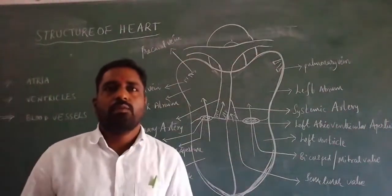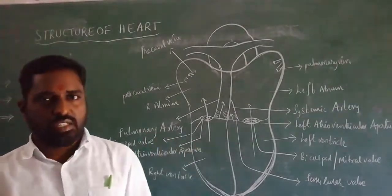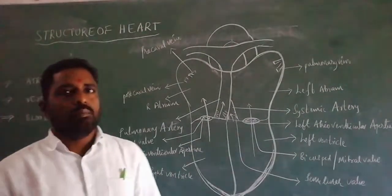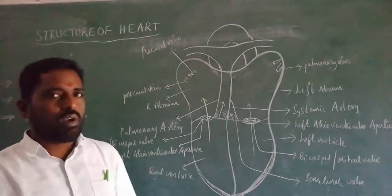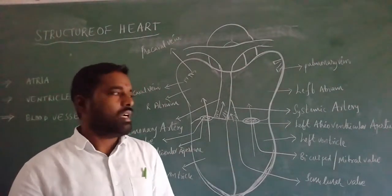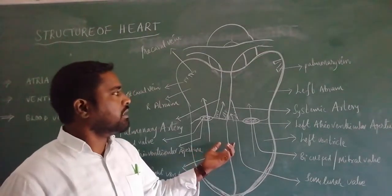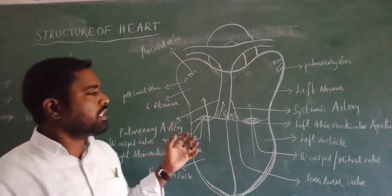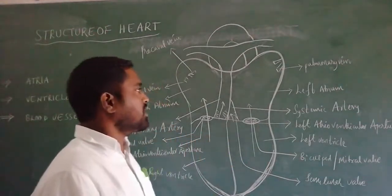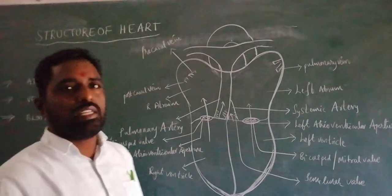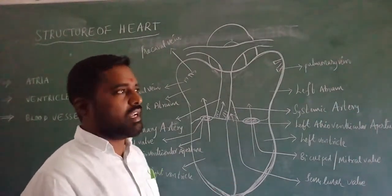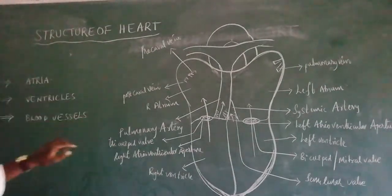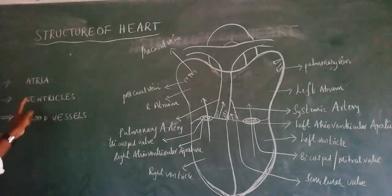Today we are going to discuss about the structure of the heart. The human heart is present between the two lungs in the thoracic cavity, in a region called the mediastinum. The size of the heart is that of the individual's fist. The heart is a pear-shaped or cone-shaped structure, and the weight of the heart is nearly 300 grams.